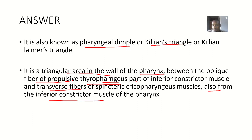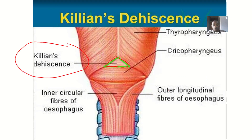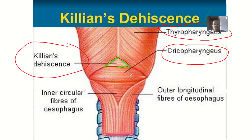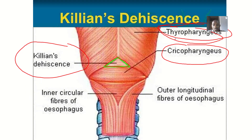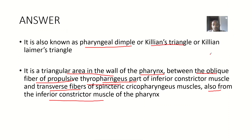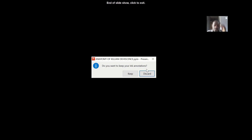So to clarify: it is a triangular area between the oblique fibers and the transverse fibers of the inferior constrictor muscles of the pharynx. The oblique fibers are from the thyropharyngeus part, while the transverse fibers are from the cricopharyngeus part — but all of them come together to form the inferior constrictor muscle of the pharynx. So the inferior constrictor muscle has a thyropharyngeus part made of oblique fibers, and a cricopharyngeus part made of transverse fibers. This area is what we call Killian's dehiscence.